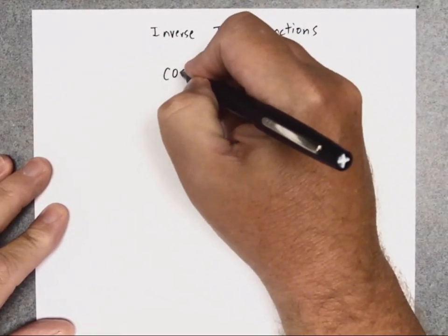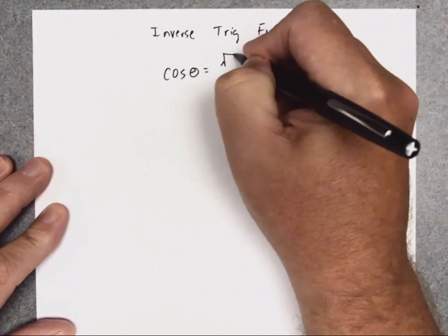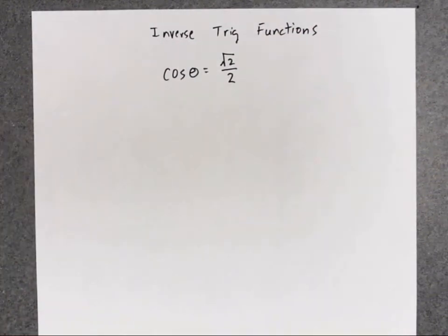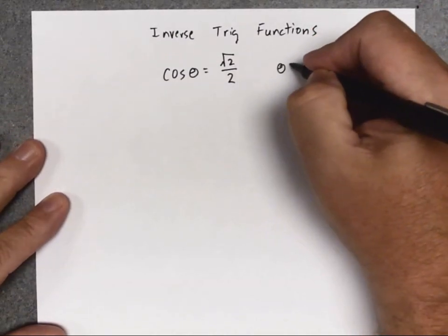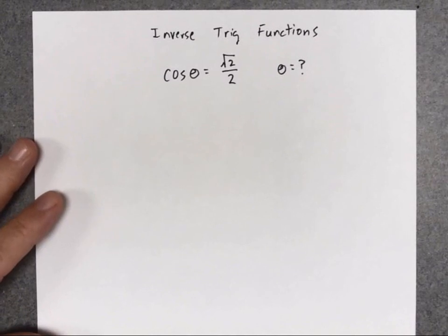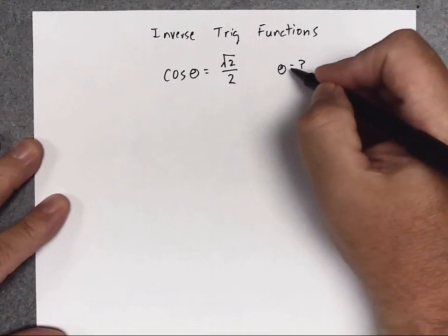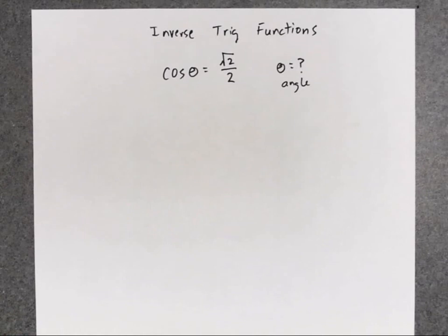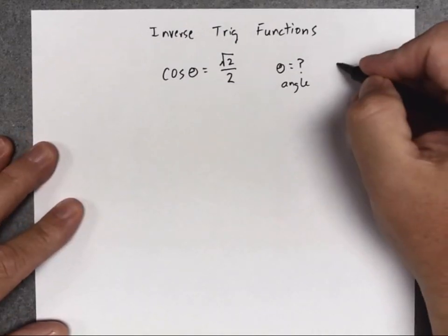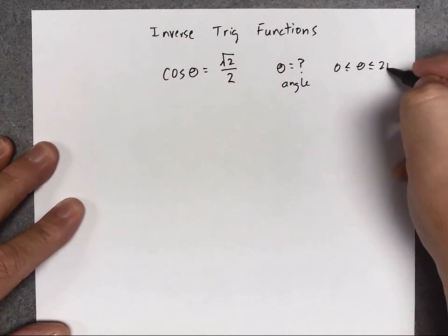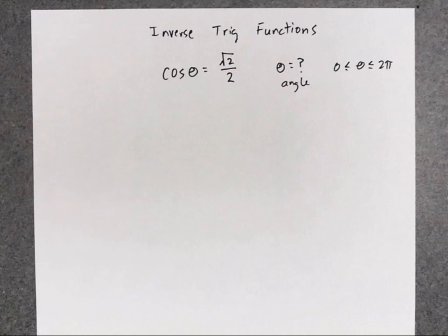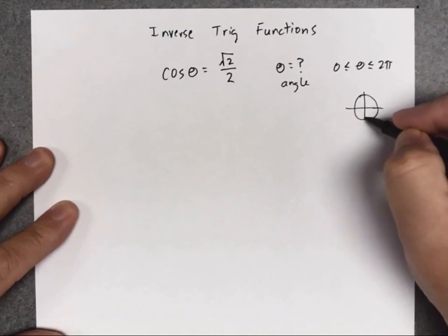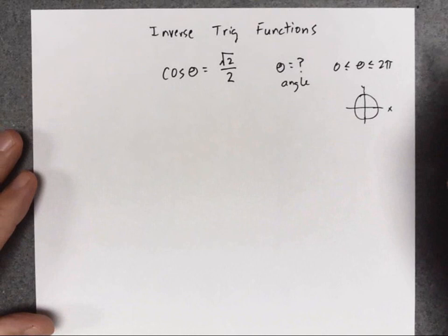Hopefully when I do this, this will seem very simple because we've already covered this. Say, for instance, you were given the equation cosine of theta equals square root of 2 over 2, and you were asked to solve this for theta. We're trying to find the angle that when you take the cosine, it's square root of 2 over 2. Let's limit our answers to 0 to 2π — one trip around the unit circle. So you think of the unit circle and you ask yourself: for what angles is the cosine equal to square root of 2 over 2?